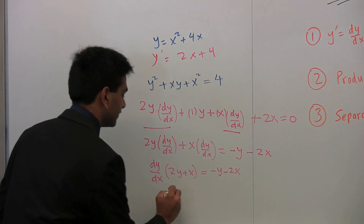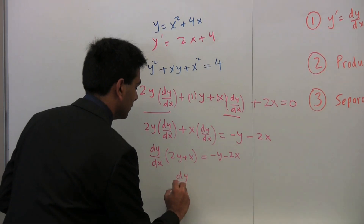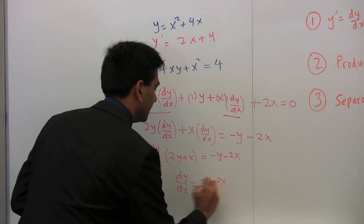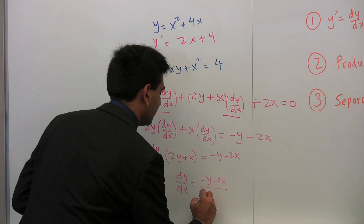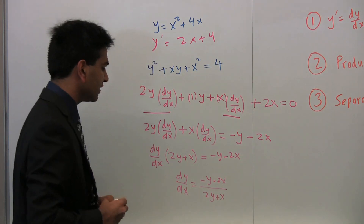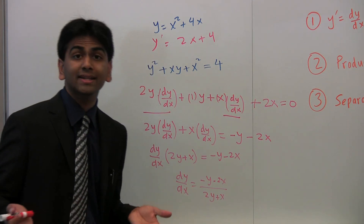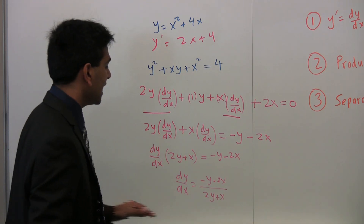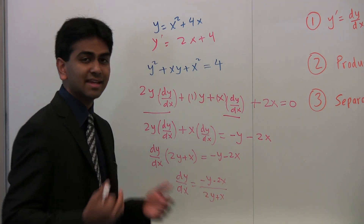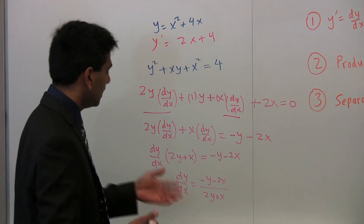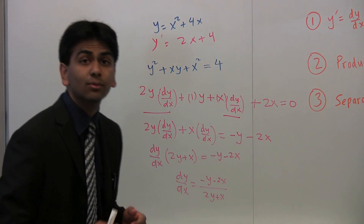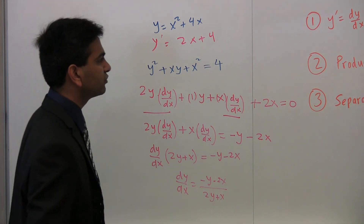Since all of these terms have a dy/dx, we can factor dy/dx out. That leaves us with dy/dx times (2y plus x) equals negative y minus 2x. Finally, solving for dy/dx, we get dy/dx equals (negative y minus 2x) divided by (2y plus x). Notice how the derivative of this implicit function is also expressed in terms of both x and y.